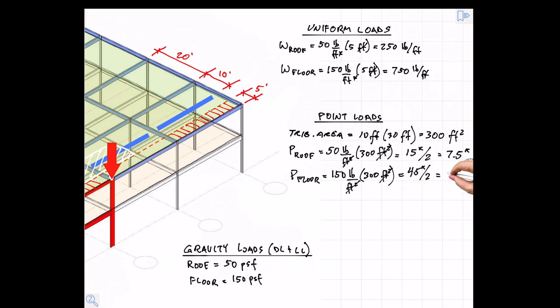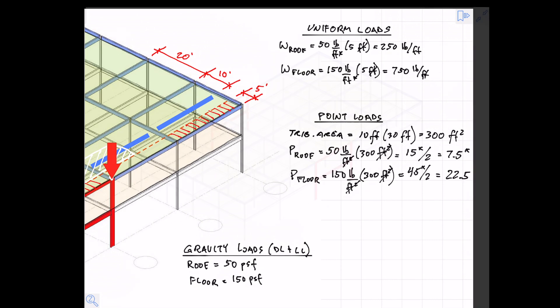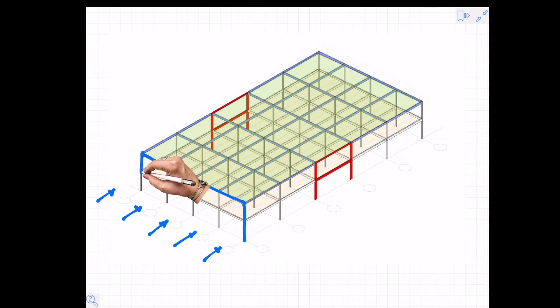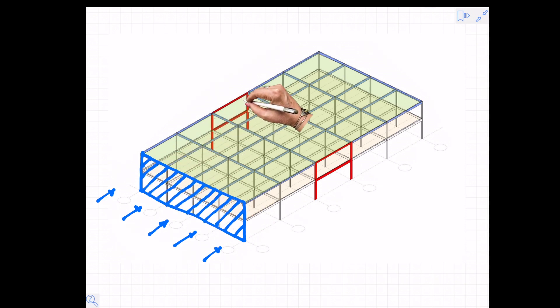Next we look at the wind loads, so the wind is acting on the short face as we said and it's acting as a pressure across this entire surface that's shaded in blue. There's also a suction force on the back side but we can combine those together as a total of 15 pounds per square foot on the front surface here as shown.